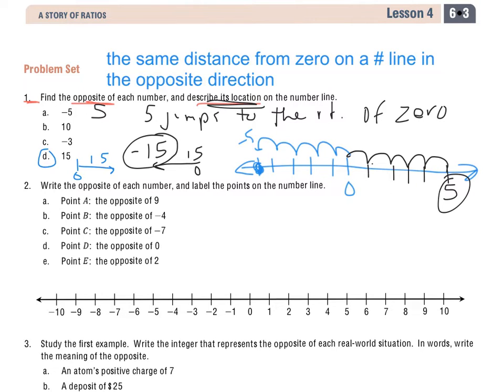And when you describe this location, very similar to A. Where's the location of the opposite? It's 15 jumps to the left of 0.